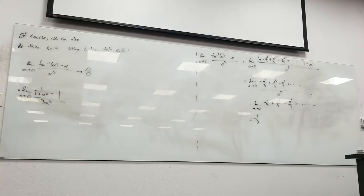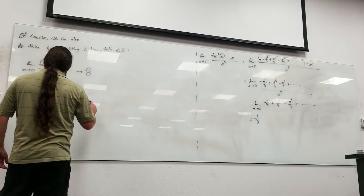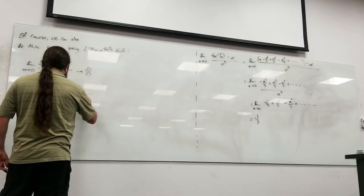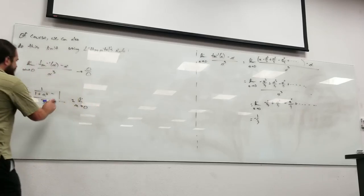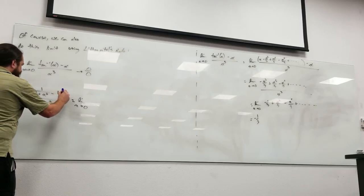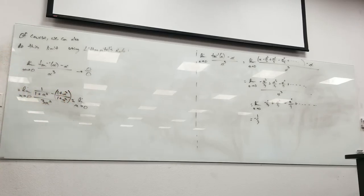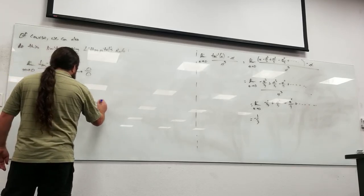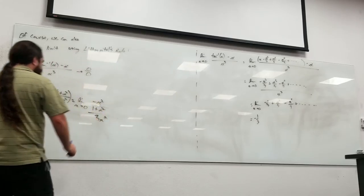Do you want to just try algebraically manipulating this thing and see if we can get something nice to happen out of it? Let's see. This is the limit as x goes to zero of... I'm going to write 1 as 1 plus x squared over 1 plus x squared. So what do I have? I have negative x squared over 1 plus x squared over 3x squared. Is that right?